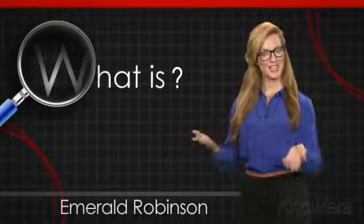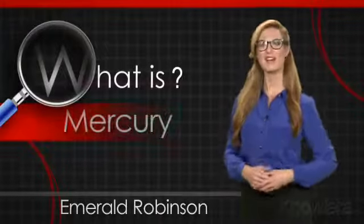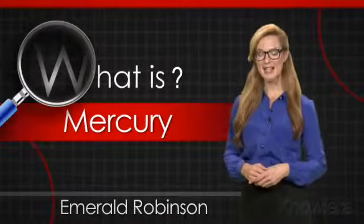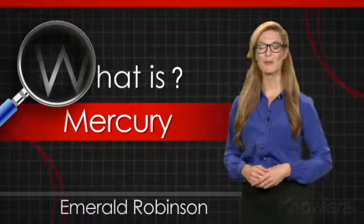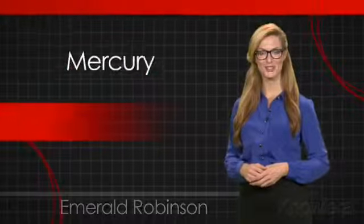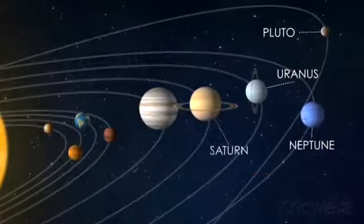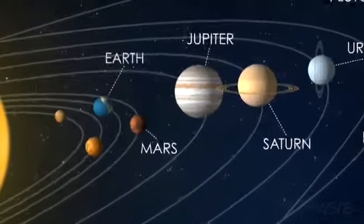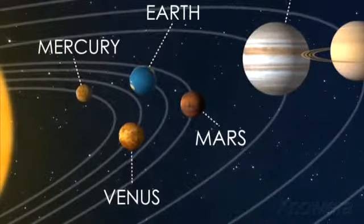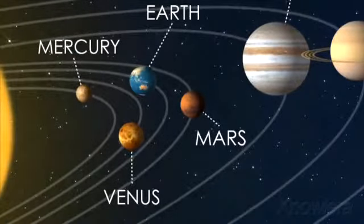In this What Is video, we get up close and personal with planet Mercury. Named after the Roman messenger of the gods, Mercury is the innermost and smallest planet in the solar system, only slightly larger than Earth's moon.